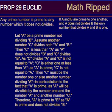Let A be a prime number not dividing B. Assume another number C divides both A and B. Then C is less than A, as A does not divide B and C divides B. As C divides A and C is not equal to A, C is either 1 or less than A.